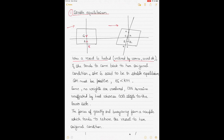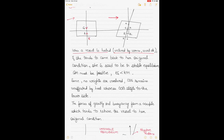I've discussed the heeling and listing concept in previous videos, and I'll provide links in the description. Since this is video 9, I advise watching the first 8 videos before this one. I'm only discussing new concepts here. So, when a vessel is heeled by waves, wind, or other external forces, if she tends to come back to her original condition, she is said to be in stable equilibrium.